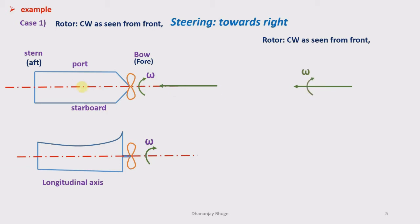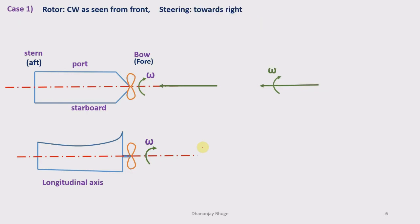To draw the spin vector using the right-hand screw rule: hold the axis of spin in your right hand and curl the fingers in the direction of spin velocity. Your thumb will point in the direction of the vector representing spin angular velocity. This vector is called the spin vector.